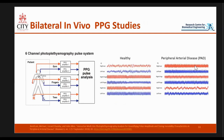I'll talk about some previous research. John Allen from Coventry and his team have done bilateral in vivo PPG studies, taking PPGs on both sides of the body — left and right — at different locations like the ears, fingers, and toes, on patients as well as healthy subjects. The good news is that the body is symmetrical in terms of PPG — the right and left are more or less the same. Interestingly, the ear and the finger are very similar, but when it comes to the toe there's a clear difference, because this patient had peripheral arterial disease, specifically leading to the lower body and lower leg vessels.